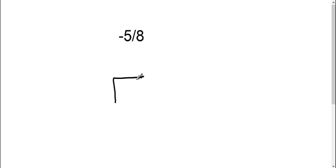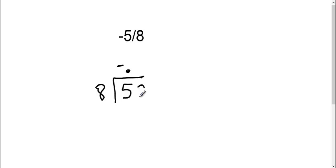We have negative 5/8 and we are converting to a decimal to the nearest hundredth if we need to. So what I need to do is make a long division problem. The 5 goes on the inside, your 8 goes on the outside. Now we know it's going to be negative, so I'm just going to add my negative there so we don't forget about it. Now 8 does not go into 5, so I need to add my decimal and add my 0.